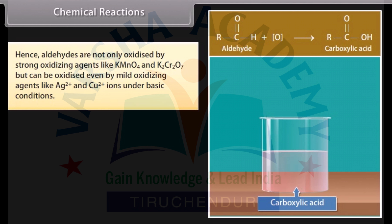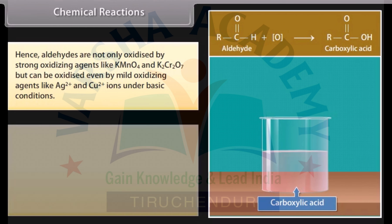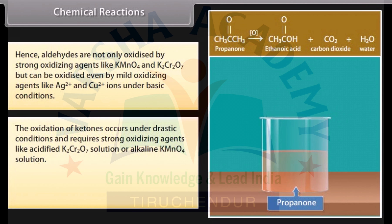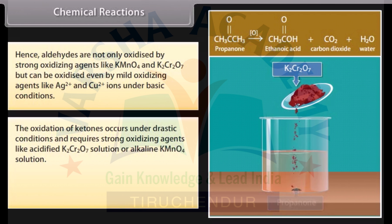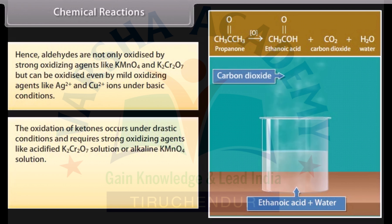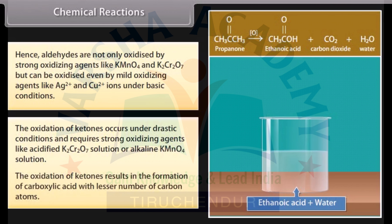Hence, aldehydes are not only oxidized by strong oxidizing agents like potassium permanganate and potassium dichromate, but can be oxidized even by mild oxidizing agents like Ag⁺ and Cu²⁺ ions under basic conditions. The oxidation of ketones occurs under drastic conditions and requires strong oxidizing agents like acidified potassium dichromate solution or alkaline potassium permanganate solution. The oxidation of ketones results in the formation of carboxylic acids with a lesser number of carbon atoms.